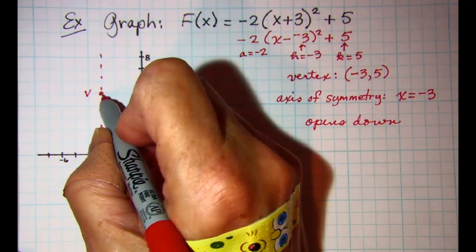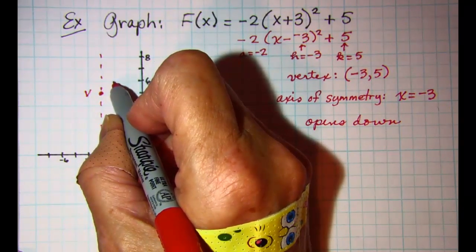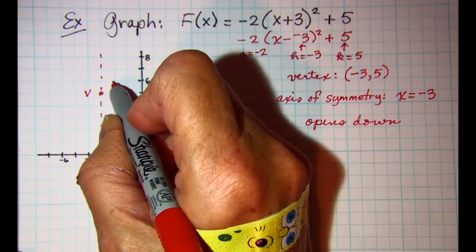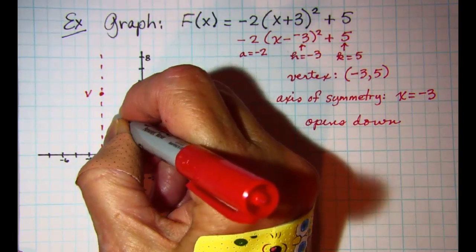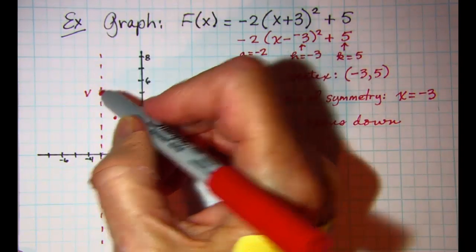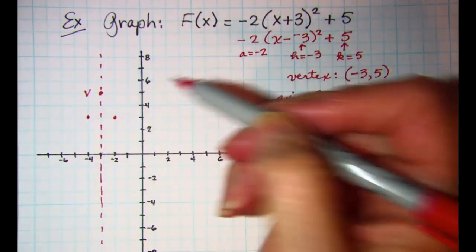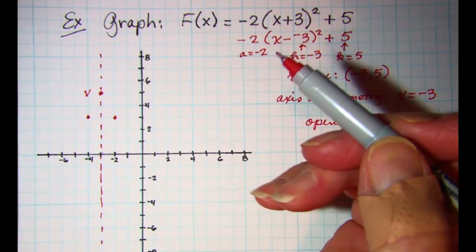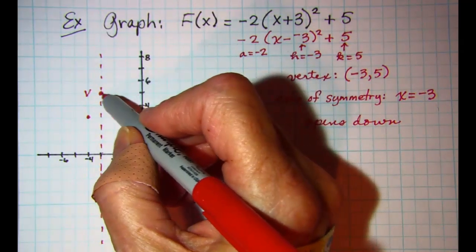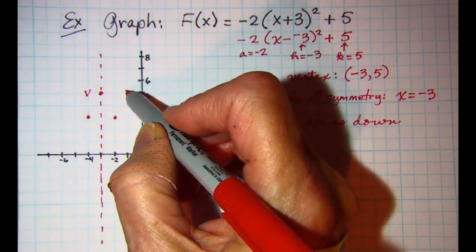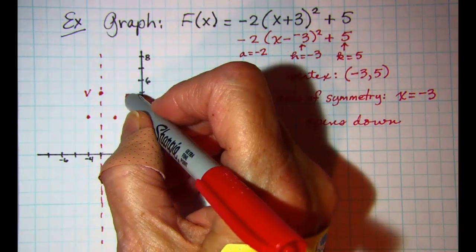With the basic graph from our vertex, we would go right 1 and up 1, but we need to multiply that by negative 2, which means we will go right 1 and down 2, and left 1 and down 2.